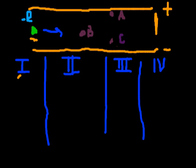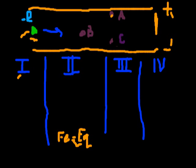Is that true? Well, anytime we have two parallel plates where one is positive and one is negative, we always want to assume a uniform electric field. So the electrostatic force Fe equals the uniform electric field times the charge. Since the charge is constant and the electric field is uniform, the electric field is the same at point A and at point B. So statement one must be false.